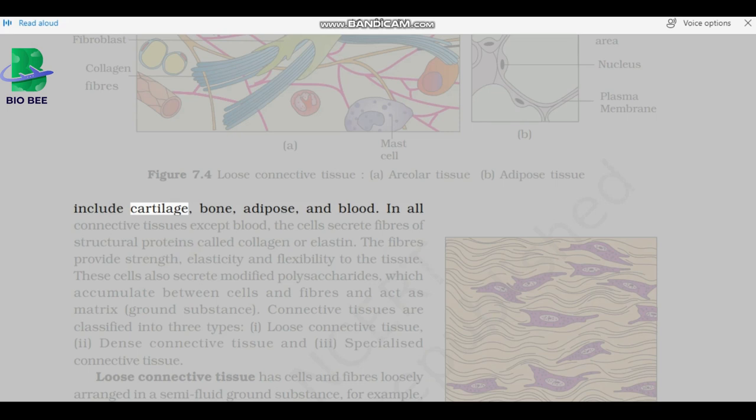In all connective tissues except blood, the cells secrete fibers of structural proteins called collagen or elastin. The fibers provide strength, elasticity, and flexibility to the tissue. These cells also secrete modified polysaccharides which accumulate between cells and fibers and act as matrix, ground substance.